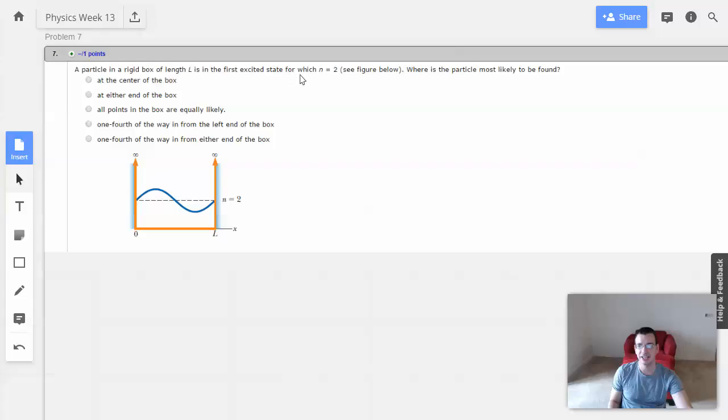Week 13, problem 7. A particle in a rigid box of length L is in the first excited state for which n equals 2. Let's see figure below. Where is the particle likely to be found?